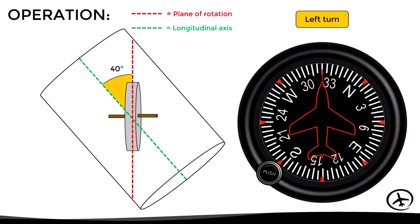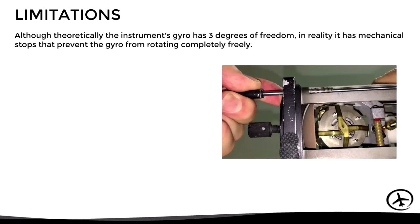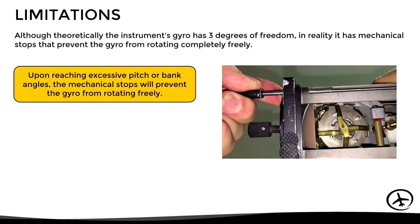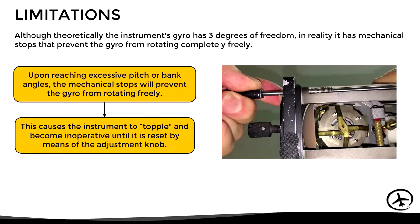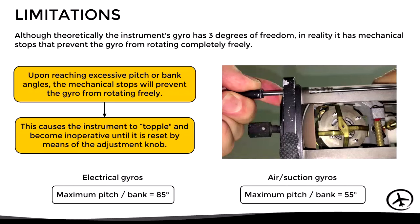The heading indicator is not perfect and has certain limitations. Although theoretically the gyro has three degrees of freedom, in reality it has mechanical stops that prevent completely free rotation. Upon reaching excessive pitch or bank angles, the mechanical stops prevent free gyro rotation, causing the instrument to topple and become inoperative until reset using the adjustment knob. Typically, electric-driven heading indicators have pitch and bank limits of around 85 degrees, while air-driven gyros have more restrictive limits of around 55 degrees.